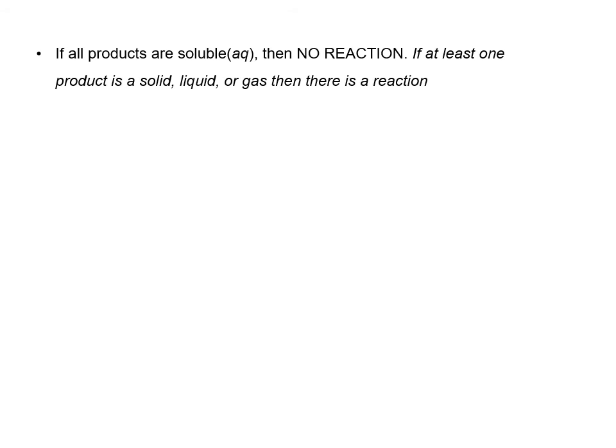If all of the products are soluble — meaning aqueous — then there is no reaction. But if at least one product is a solid, liquid, or gas, then there is a reaction. In this example over here, notice that all reactants and products are aqueous, so there is no reaction. Basically, no new substance is produced.